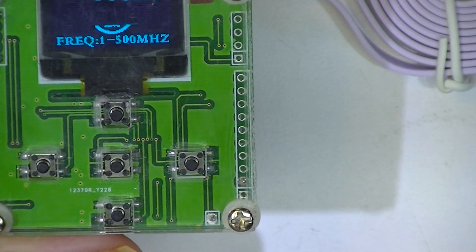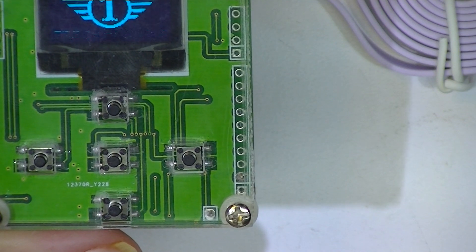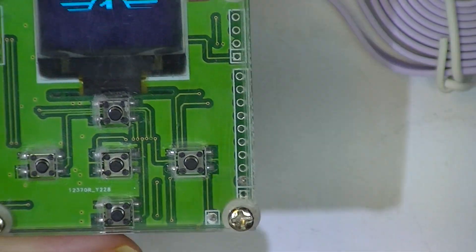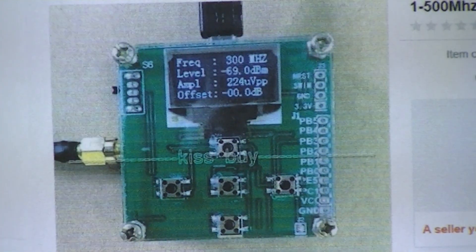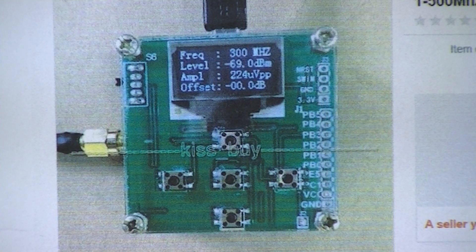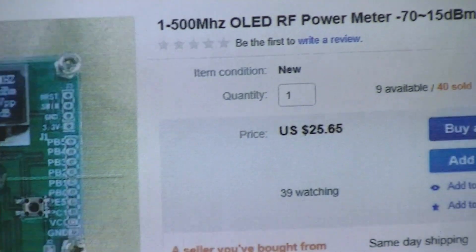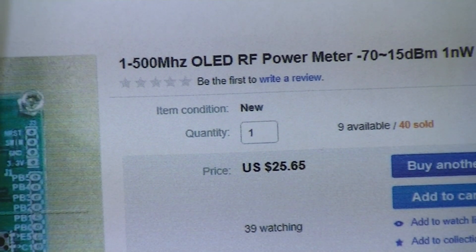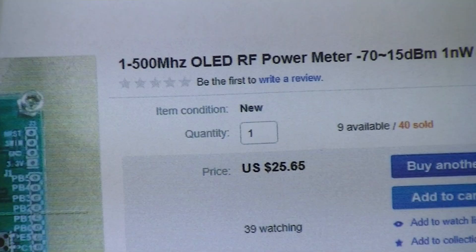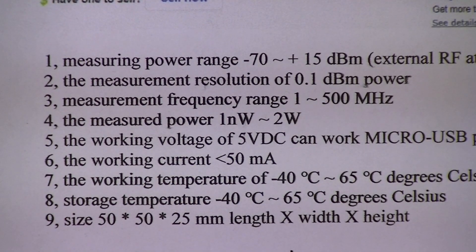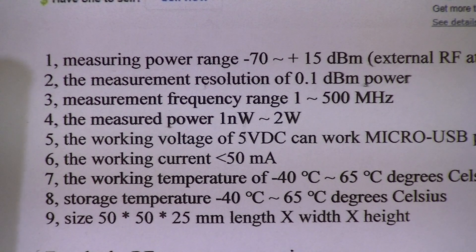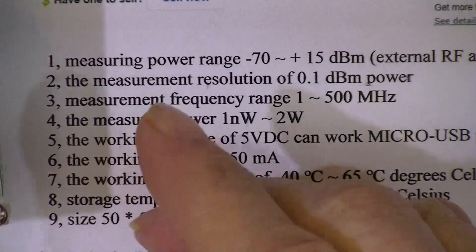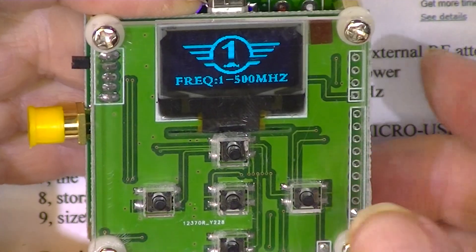At this point I don't know what to do. There is a limited amount of information on the seller's page. It shows it displaying something. The one I ordered is a 500 megahertz. Gives a measurement range of up to 2 watts.